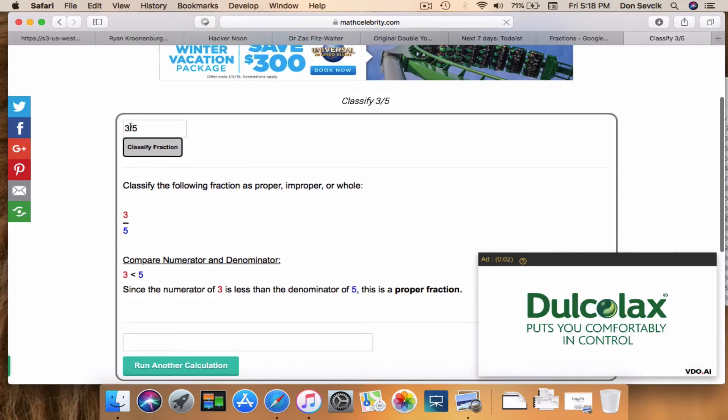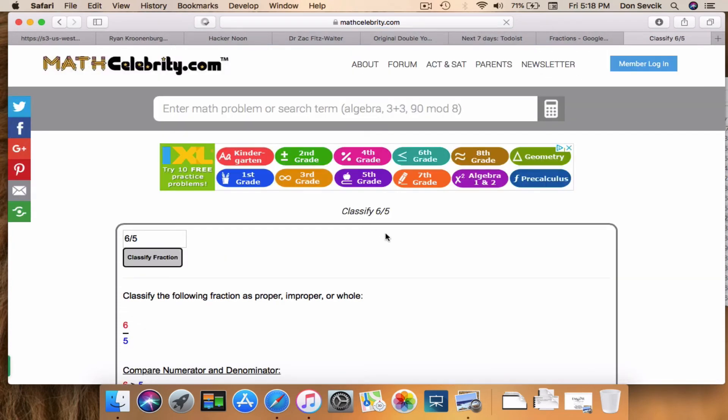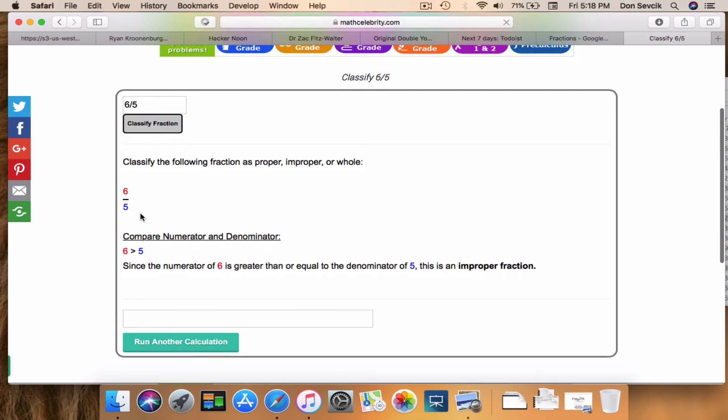But what if we had numerator greater than the denominator? In this case, six is greater than five, so this is an improper fraction.